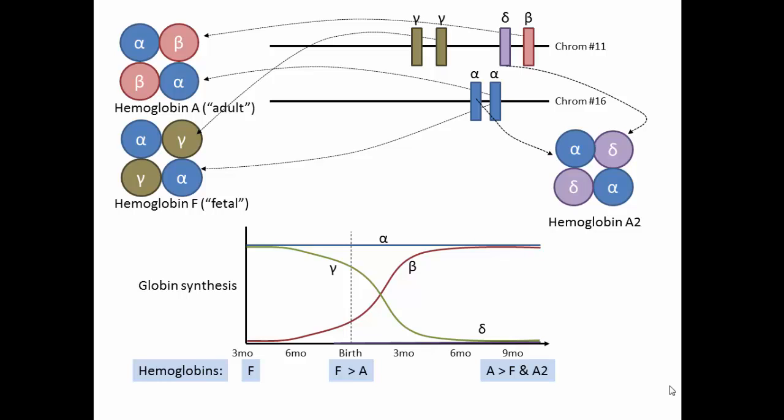Although some situations can turn on hemoglobin F production in adult life, hemoglobin A2 production always stays low. So finding a slight increase in the percent of A2 on a hemoglobin electrophoresis is a clue that there is a decrease in beta production.